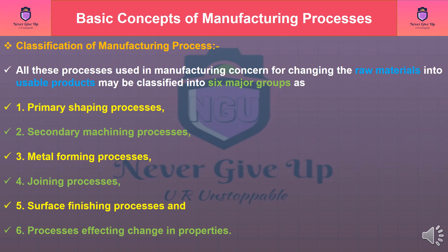All processes used in manufacturing for changing raw materials into usable products may be classified into six major groups: Primary shaping processes, Secondary machining processes, Metal forming processes, Joining processes, Surface finishing processes, and Processes affecting change in properties.